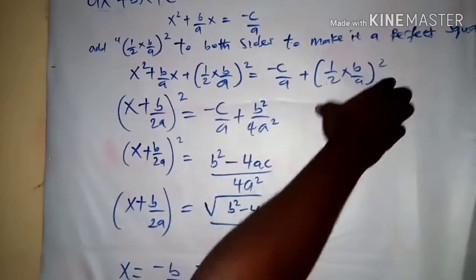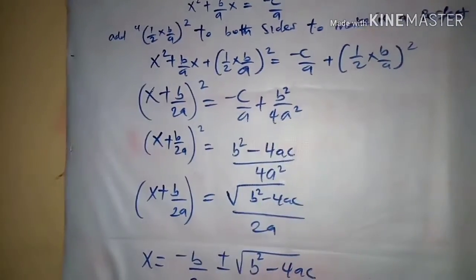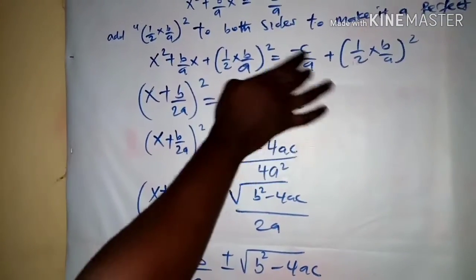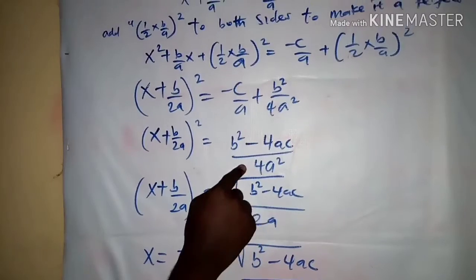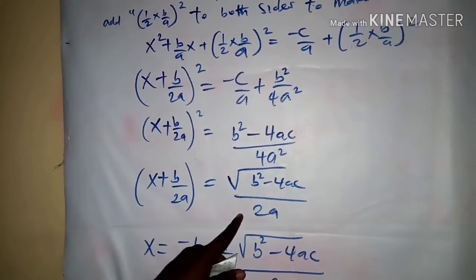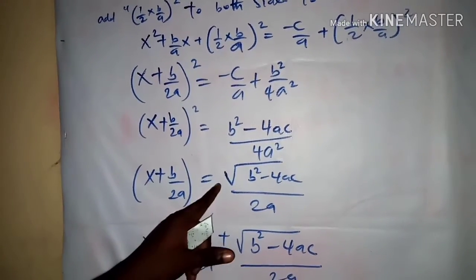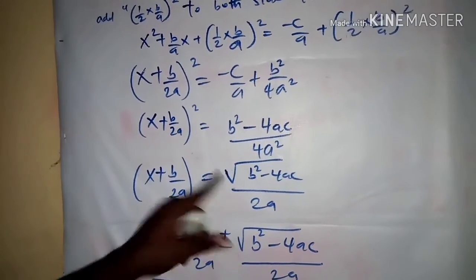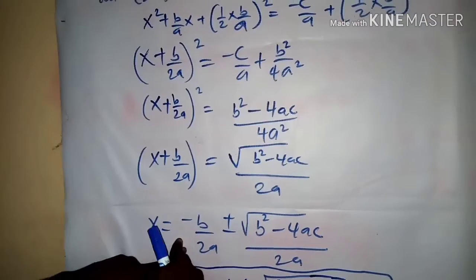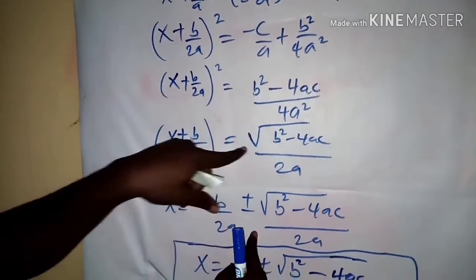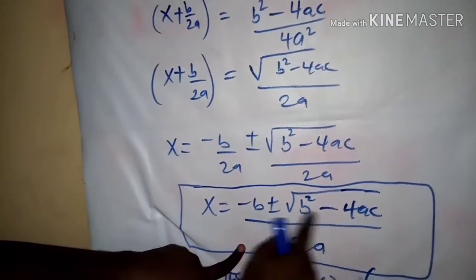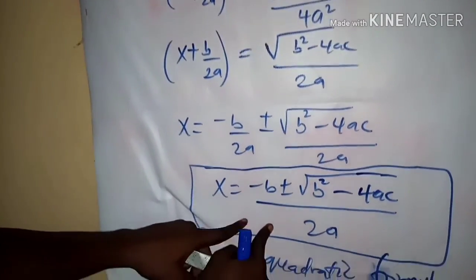I factorized it out to get (x + b/2a)² on one side, and on the other side I have -c/a + (b/2a)², which is b²/4a². After finding the LCM of a and 4a², I made it a single fraction: (b² - 4ac) / 4a². Taking the square root, since the square root of 4a² is 2a, I get x = (-b ± √(b² - 4ac)) / 2a. This is the quadratic formula.